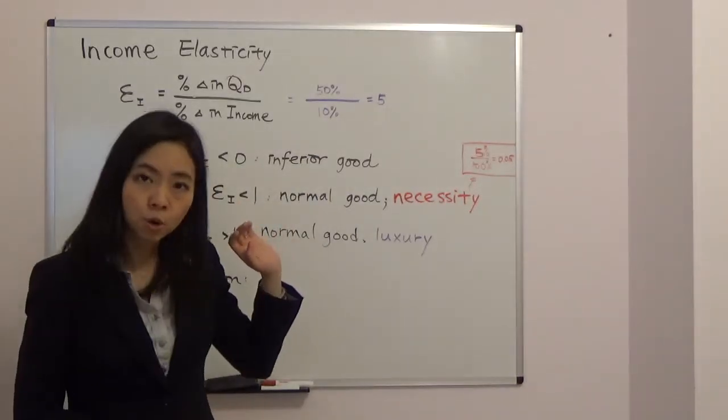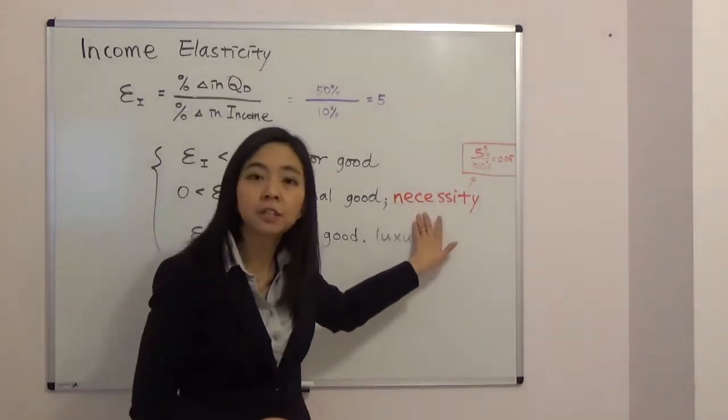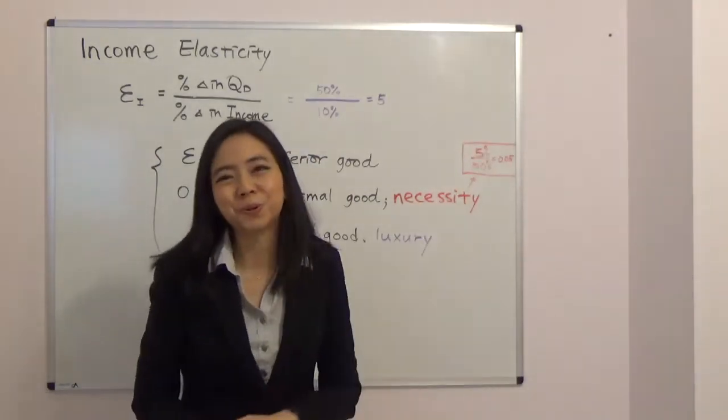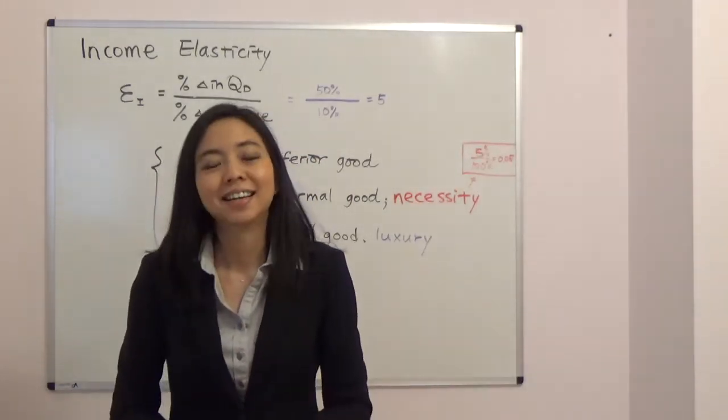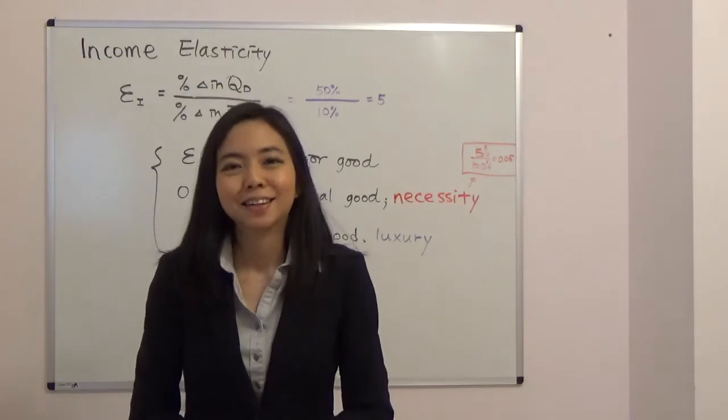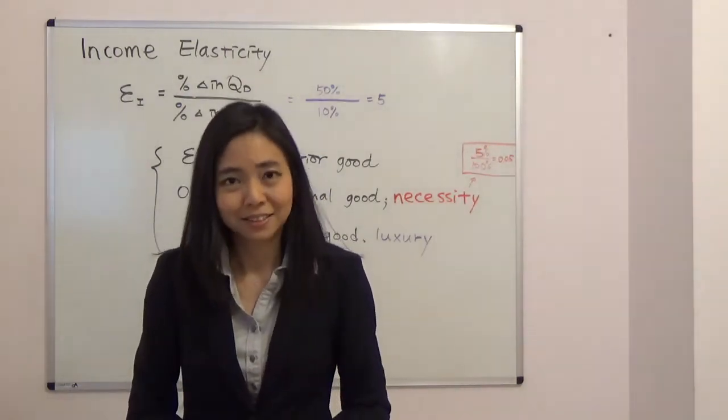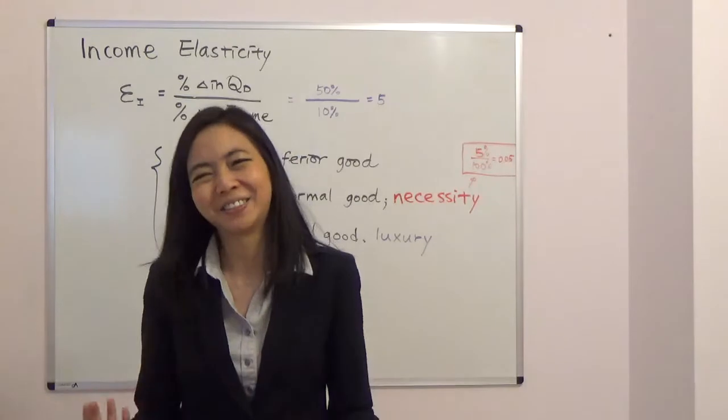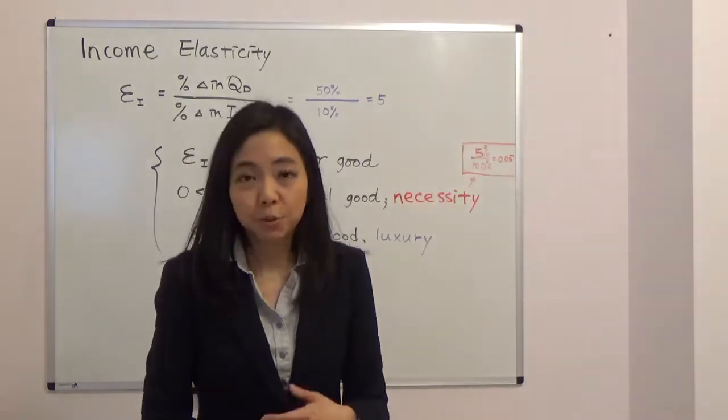If your income elasticity is between zero and one, then that's a normal good and in particular is a necessity. So suppose your income doubles and you like pasta. Are you going to consume twice as much pasta as before? No, that's just absurd.